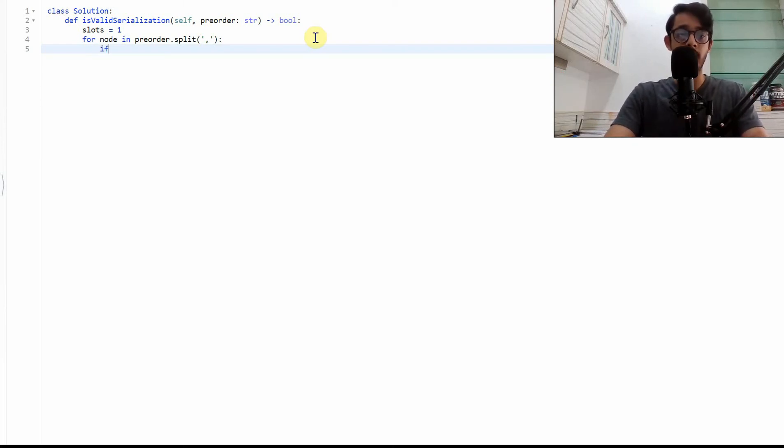And we'll say, if the current number of slots is less than equals to zero, I want to return false. Now I do slots plus equals to basically saying increase or decrease by one when you see the appropriate one. So we'll do minus one if the current node is a hash else do a plus one as simple as that.